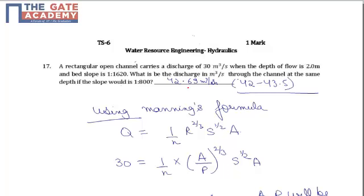Hello students, the following question is a one mark conceptual plus formula based question from Hydraulics of Water Resource Engineering. It is given that a rectangular open channel carries a discharge of 30 m³/s when the depth of flow is 2 meters and the bed slope is 1:1620.